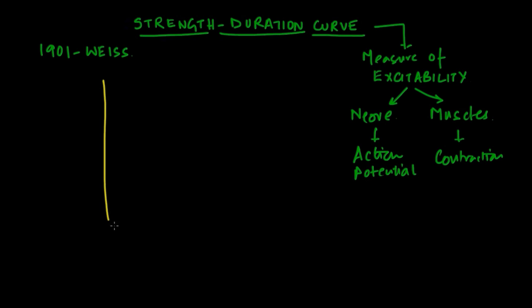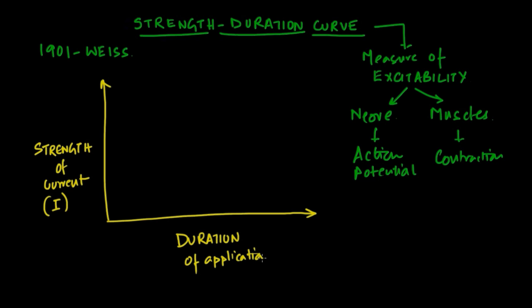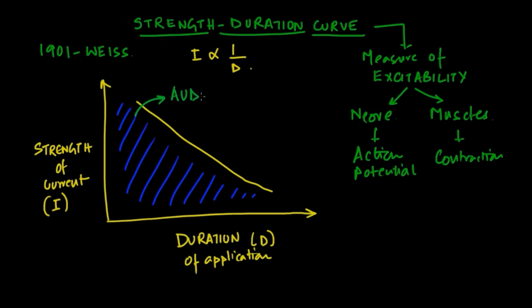Weiss studied the stimulation of nerve tissues and plotted a graph with the strength of current required to stimulate on the y-axis and duration of stimulus on the x-axis, with I denoting current and D denoting duration. He found the relationship between these two is inverse but linear, with the area under the curve denoting total charge flowing.